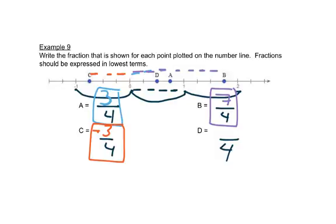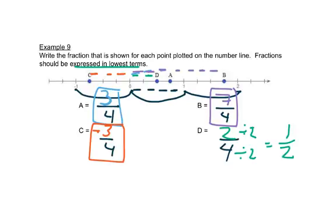Point D is 2 spaces to the right, giving 2 over 4. The problem says to express in lowest terms. For A, we can't simplify 3 and 4. For B, we can't simplify 7 and 4. For C, we can't simplify 3 and 4. But for D, we can divide top and bottom by 2, which gives us 1 half.